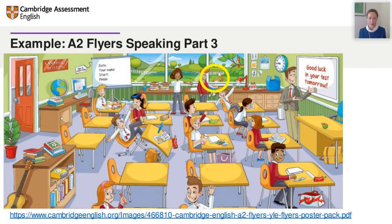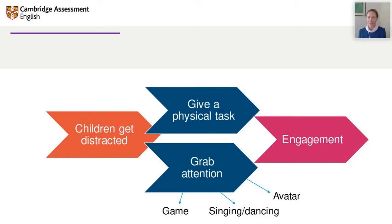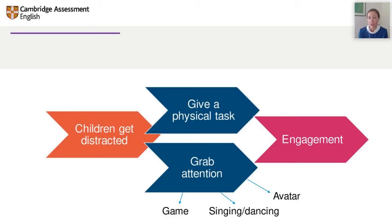That's a lovely engaging activity you can do online, really simple — something you'd do in class works online too. To summarize for children who are distracted: give a physical task, have a physical or brain break, or choose something to grab their attention — a game, singing, dancing, an avatar. And yes, these strategies work for adults too: having attention-grabbing activities and brain breaks is good for all ages.